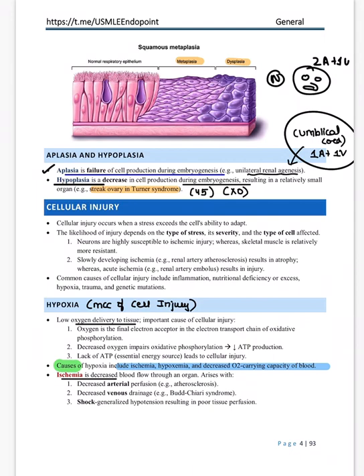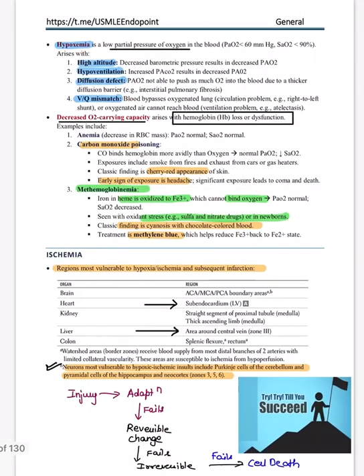Moving on to cellular injury: hypoxia is the most common cause of cell injury. Hypoxia means decreased oxygen, so ATP production decreases. Causes of hypoxia include ischemia (decreased blood flow), hypoxemia (decreased O2 carrying capacity), and decreased partial pressure of oxygen as in high altitude or hypoventilation.